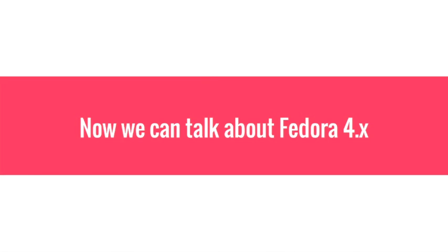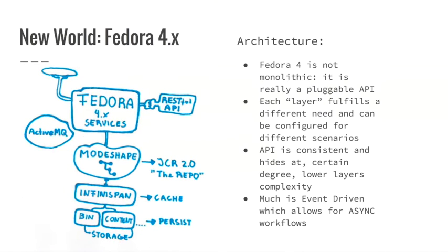So that was Fedora 3. Let's start with Fedora 4 — this is a new world. Fedora 4 has a pretty cool architecture; it's not monolithic anymore — it's like a pluggable API. We have these different layers, and each layer fulfills a different need and can be fine-tuned to work under different scenarios. We have the Fedora 4 services layer that provides outside-world services with the LDP API connected, and then we have the ModeShape layer.